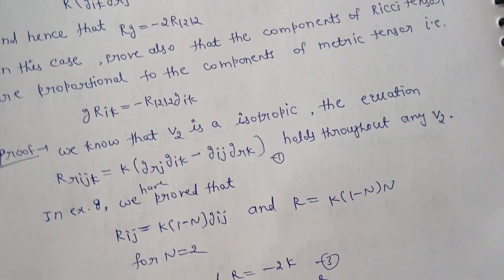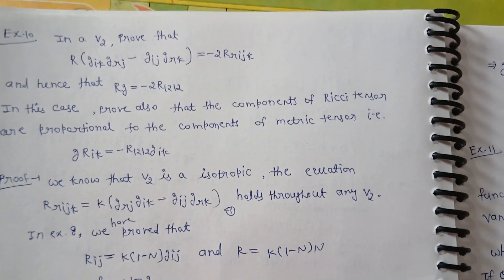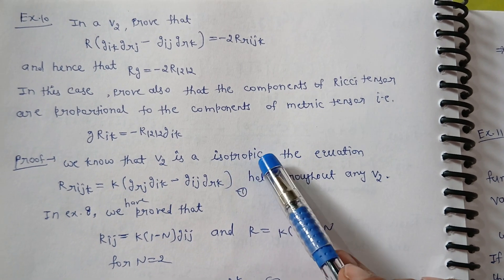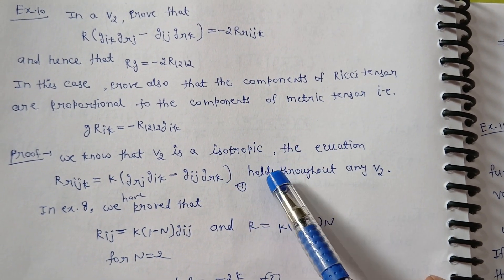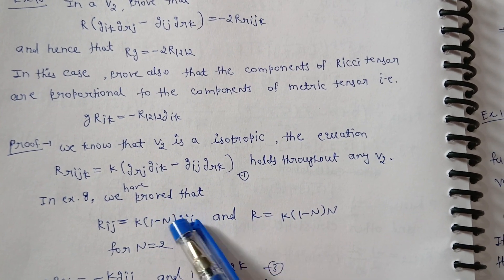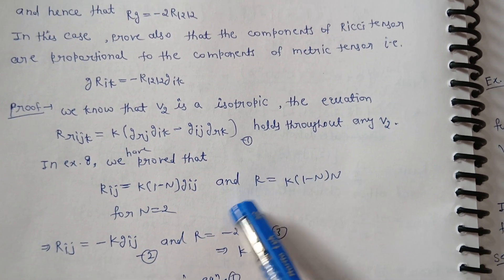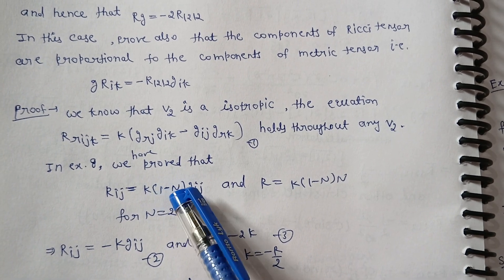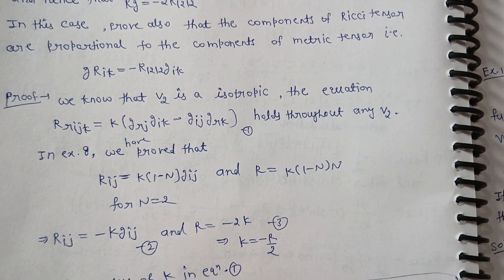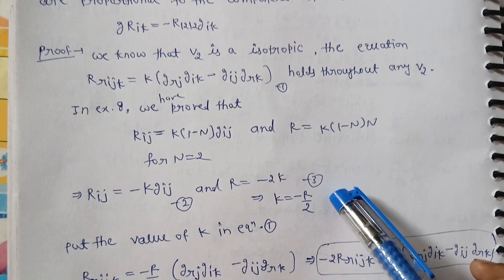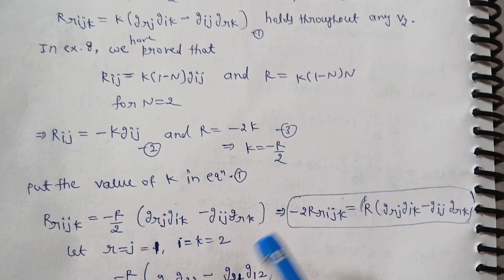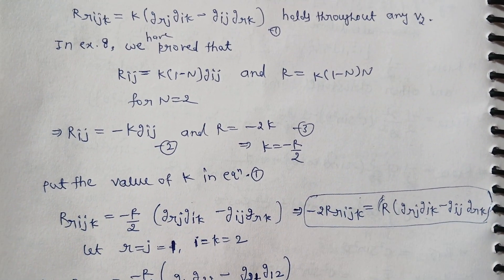Example 10: In a V2, we have to prove two or three results. First, V2 is isotropic. In example 8 these results were proved. If we substitute K into the formula for a 2-dimensional space and set K equals minus 2, we put the K value and expand the result. We cross-multiply to obtain the required expressions.